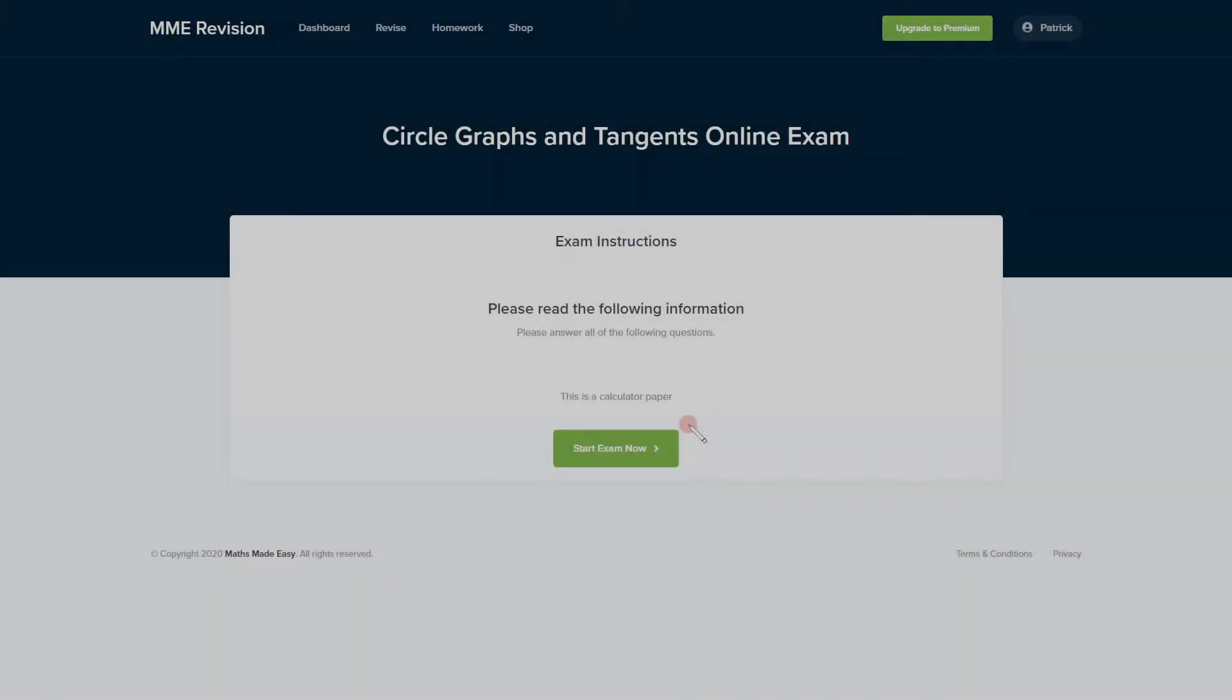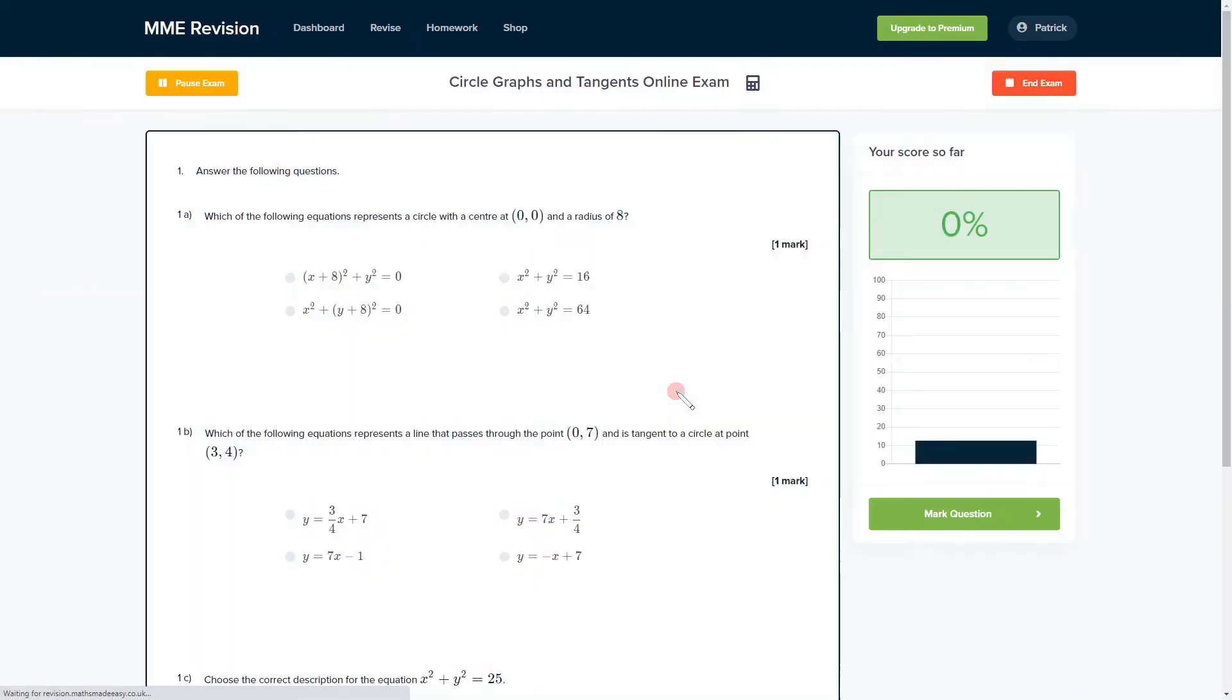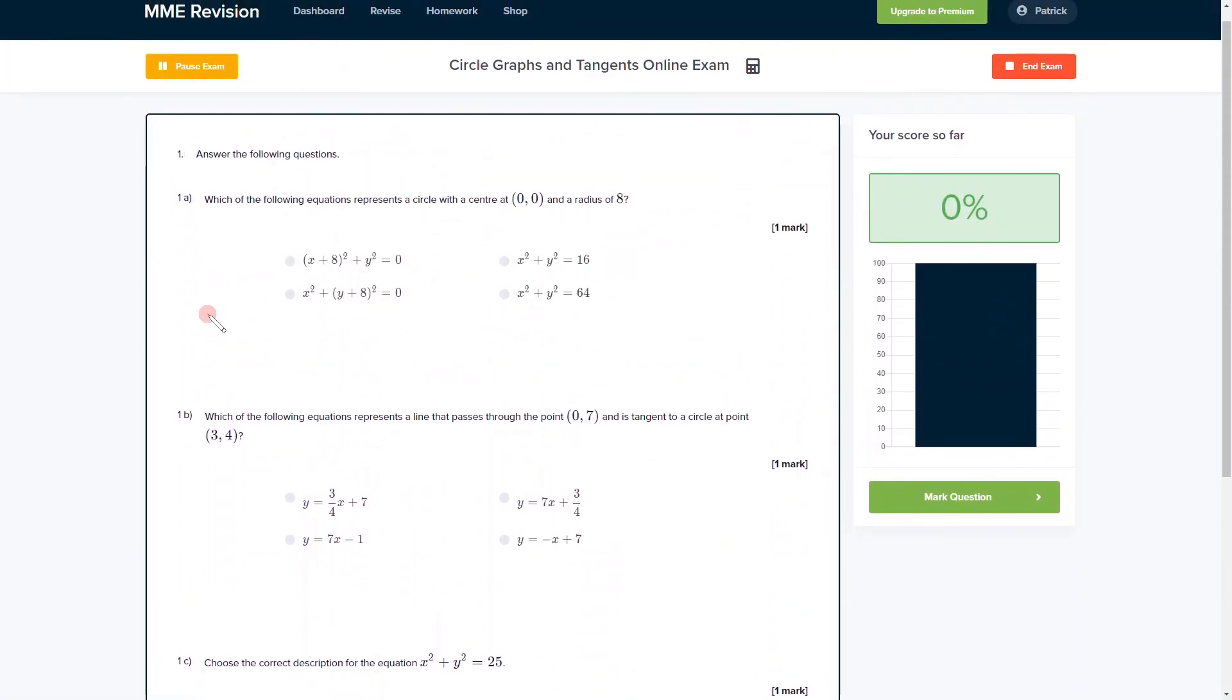If you're feeling ready to tackle some circle graphs and tangents questions, then you can have a go at our online exam. It's available through our revision platform. If you take the test, you'll find loads of different questions and a variety of different question types, so you get instant feedback on each and every one of them, which is really useful for keeping track of the areas that you need to improve. If you're interested, you can click the link below and it will take you straight there.